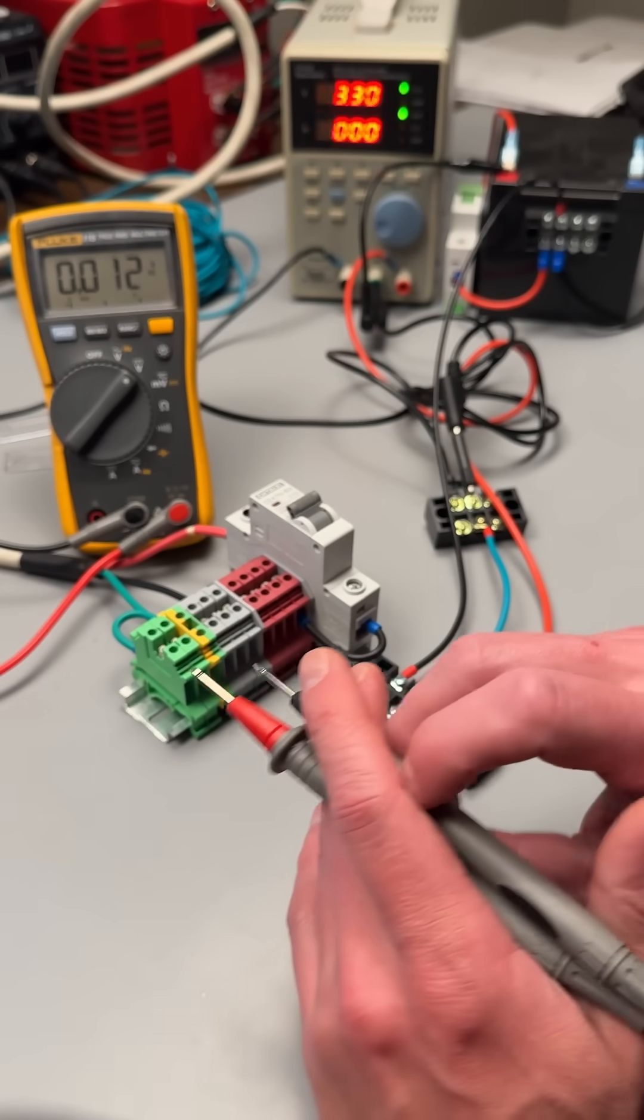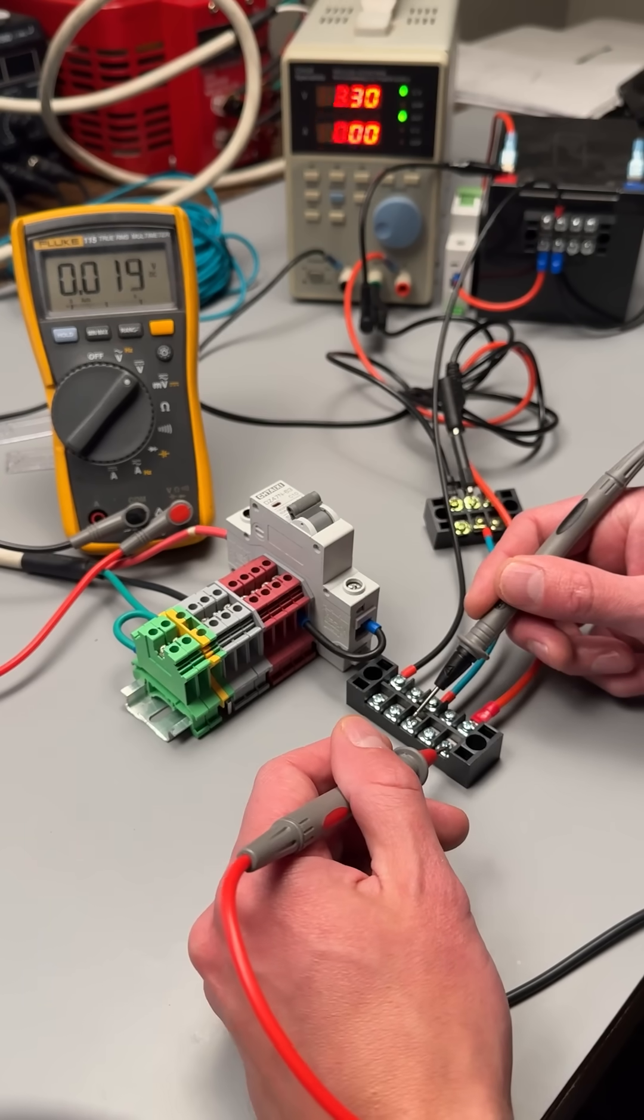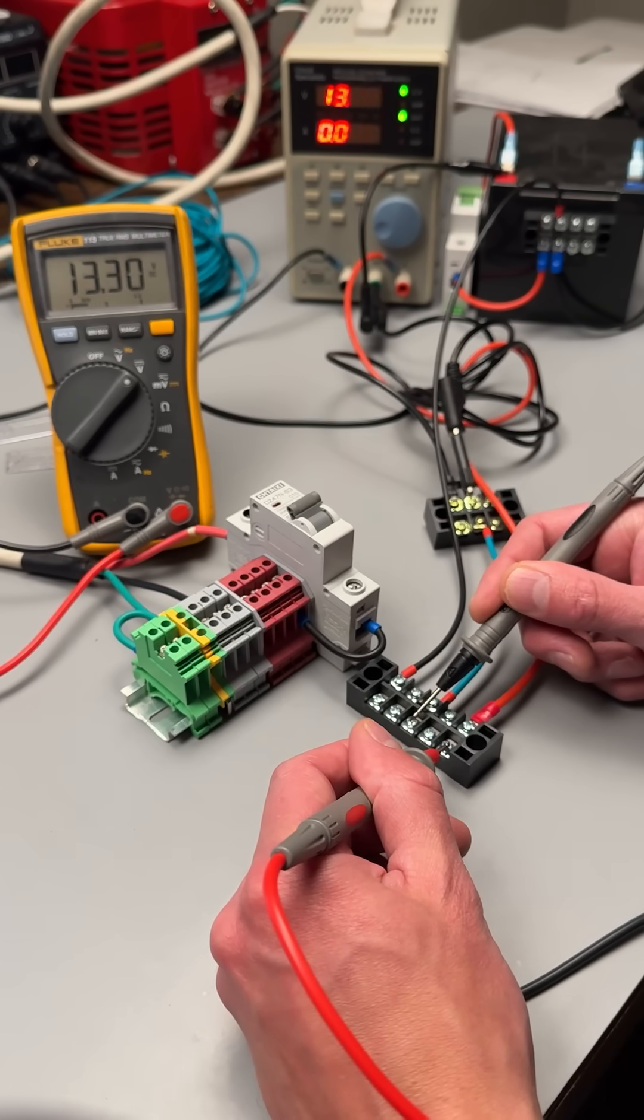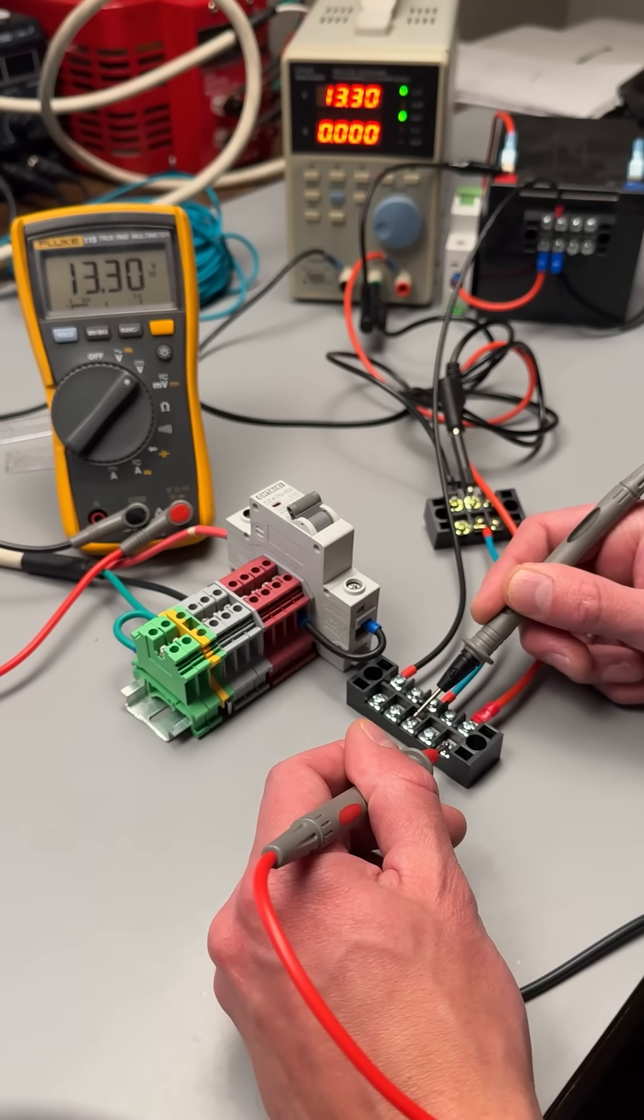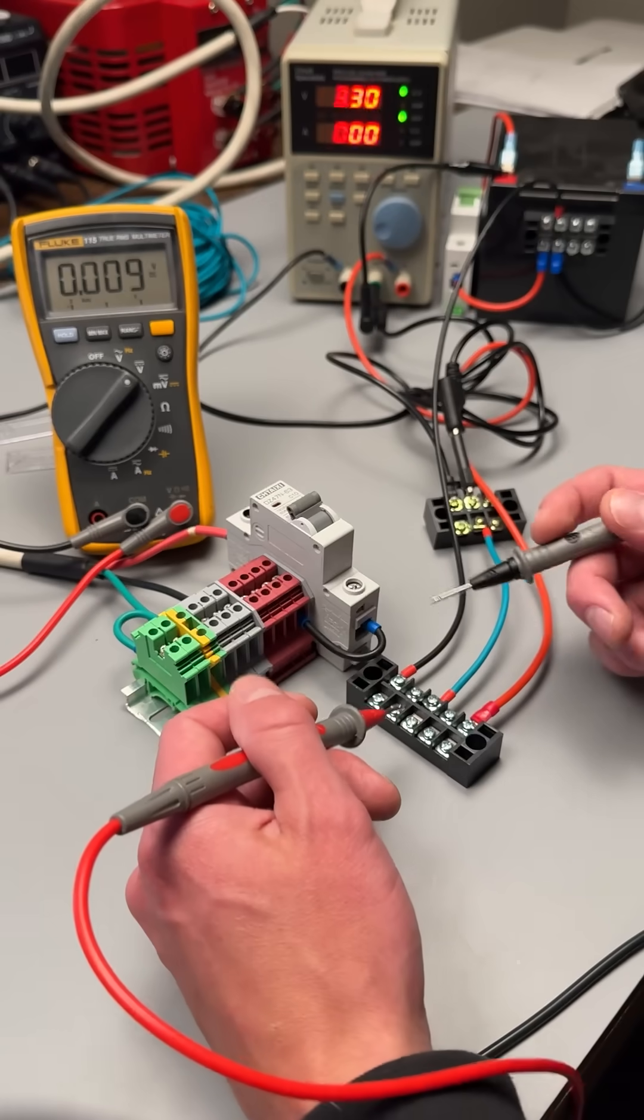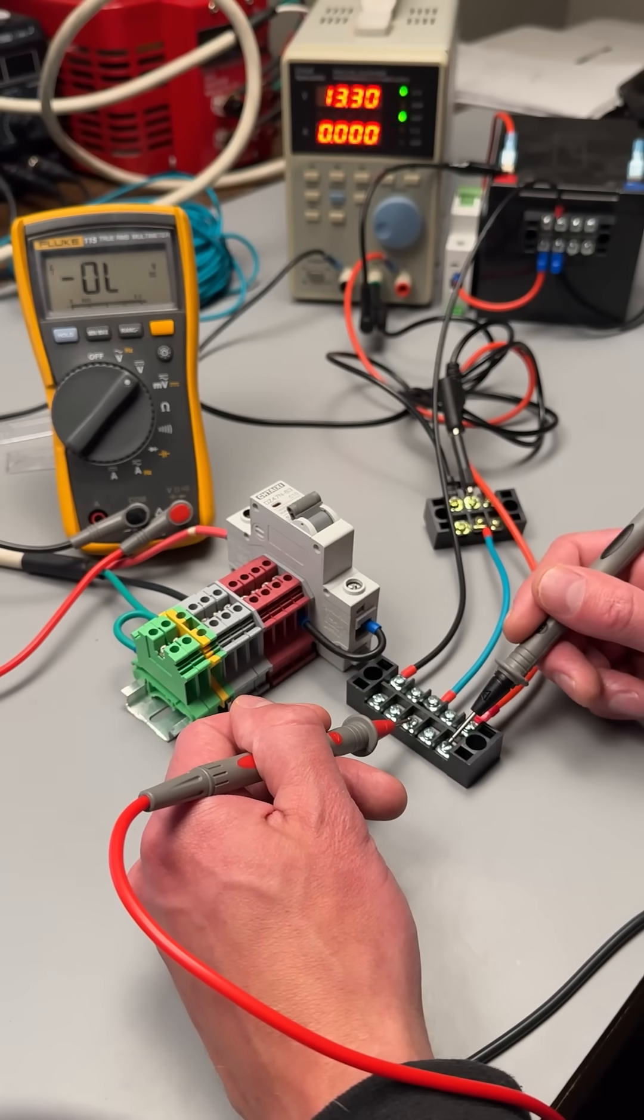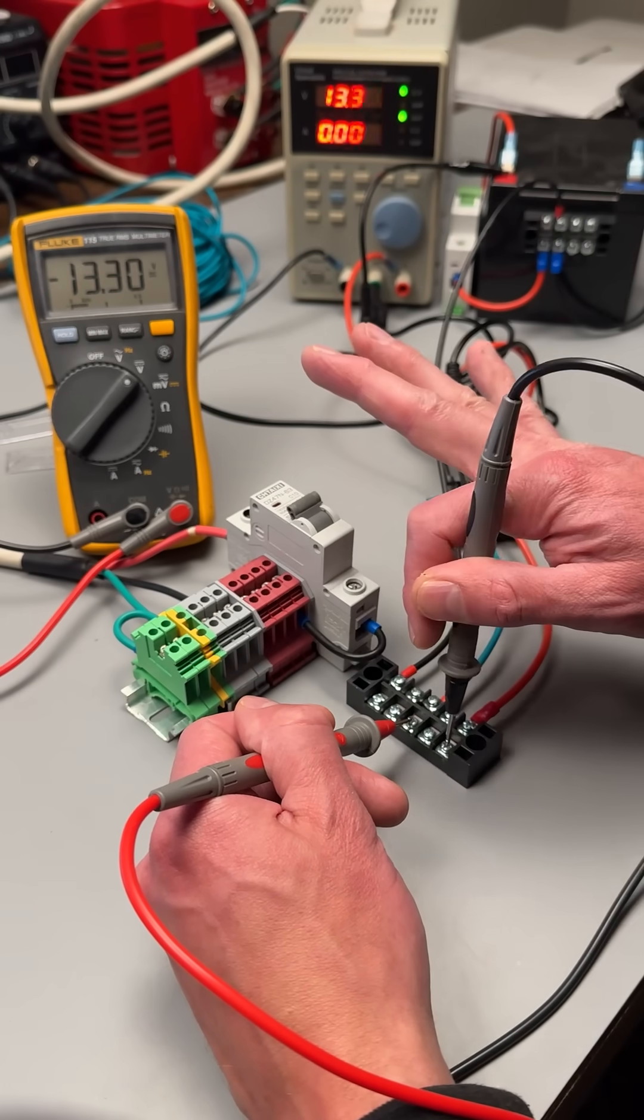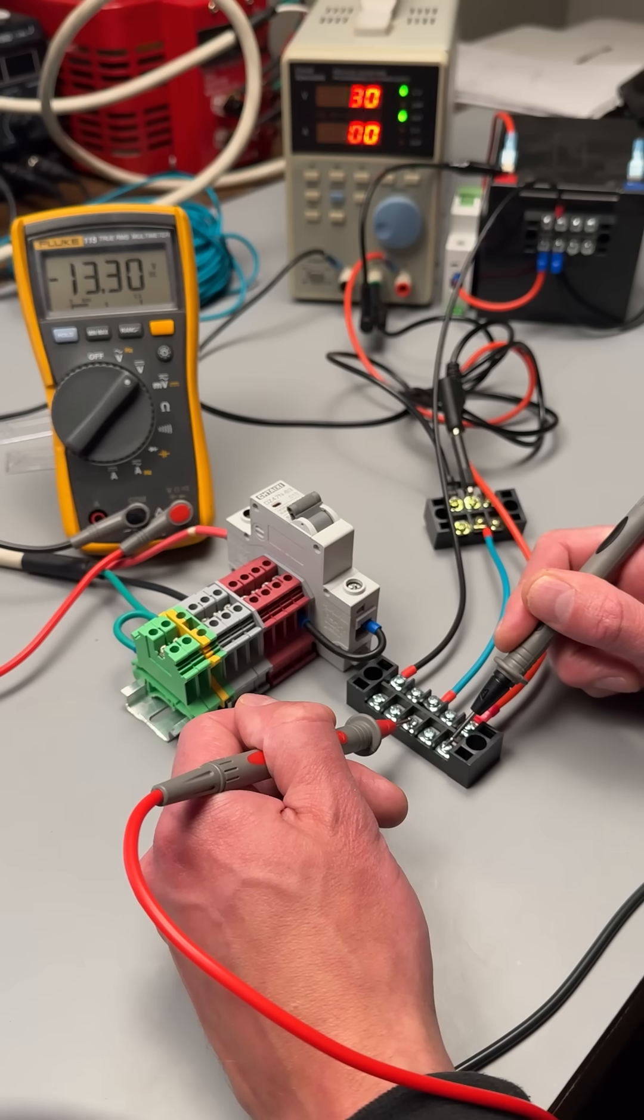So I want to address a question from the last video, basically getting at, you're taking a measurement, right, and you're getting a positive voltage. And then you're taking another measurement. What they were getting at is, wouldn't that be equivalent to basically just switching your leads around, and then you're showing a negative voltage there.